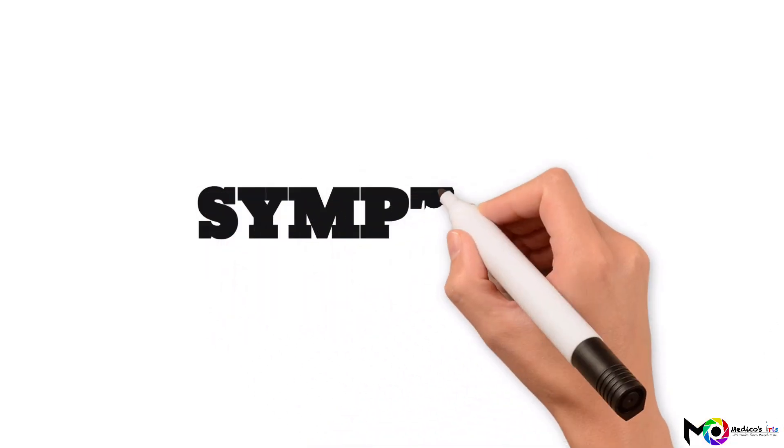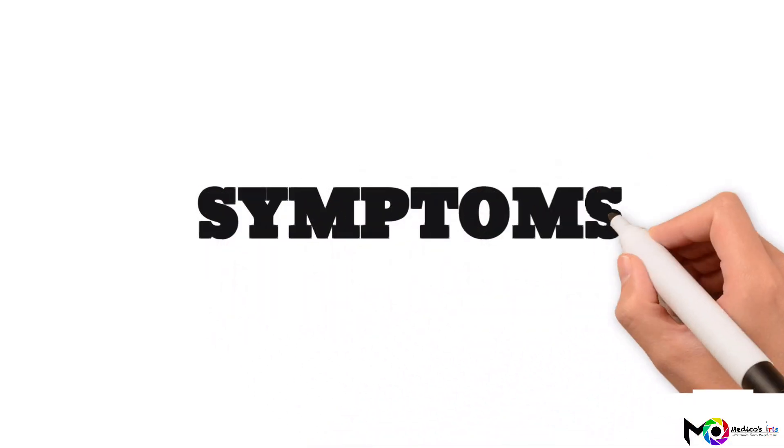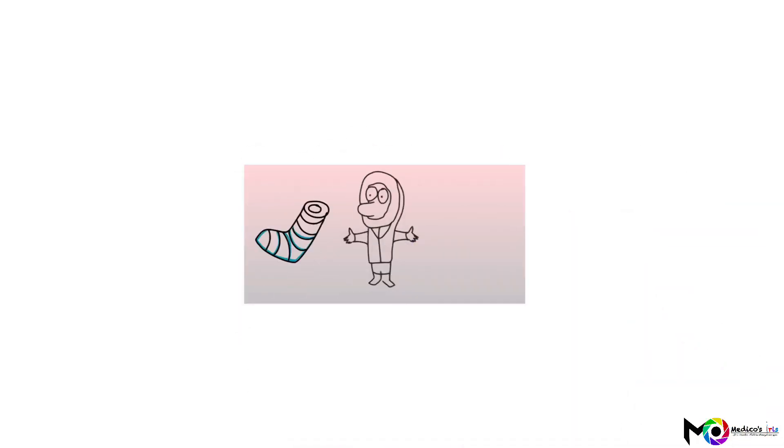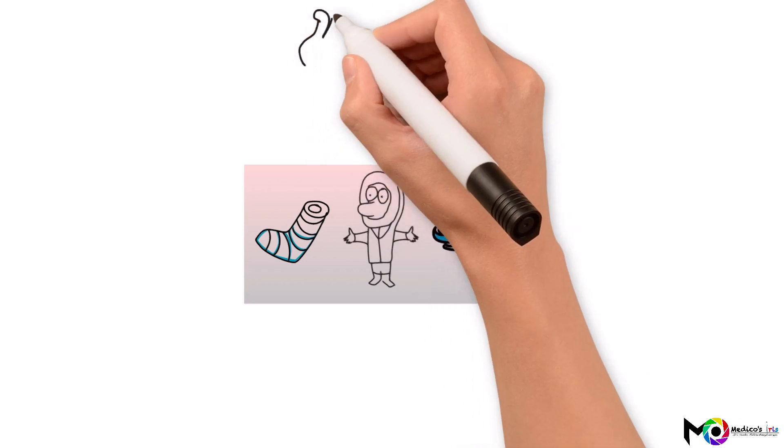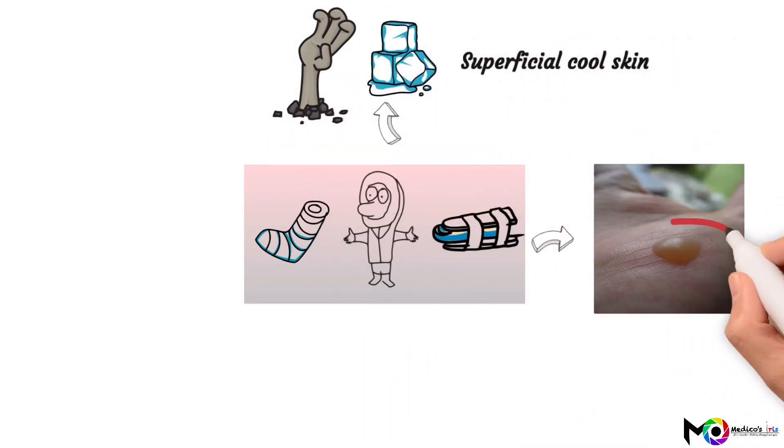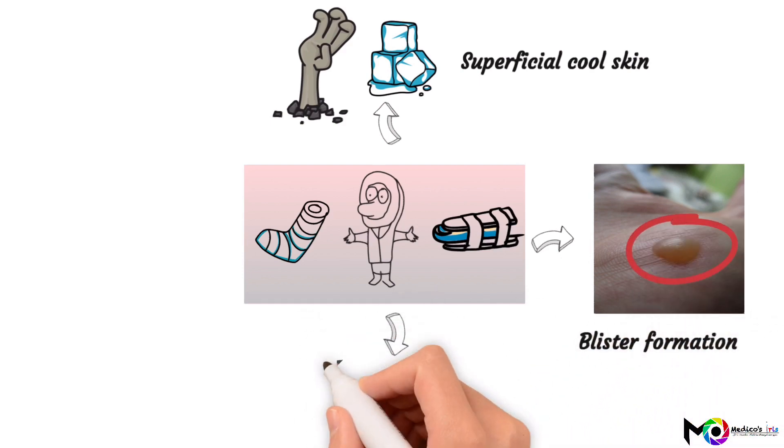After discussing the mechanism at the microscopic level, we will now see what symptoms it leads to. The most common sites to be affected are the hands and lower limbs. Initially, the skin of the affected part will be cold to touch. There will be blister formation, which can be clear or blood-filled. A person can also have a pricking sensation or itching.